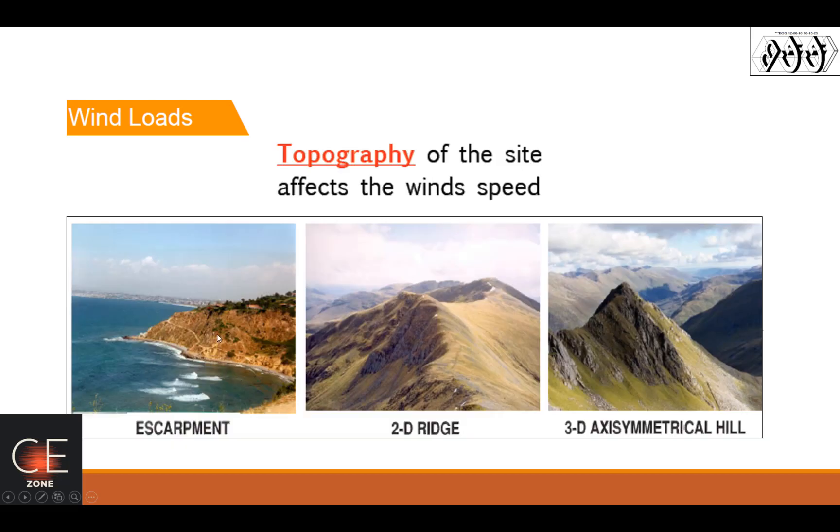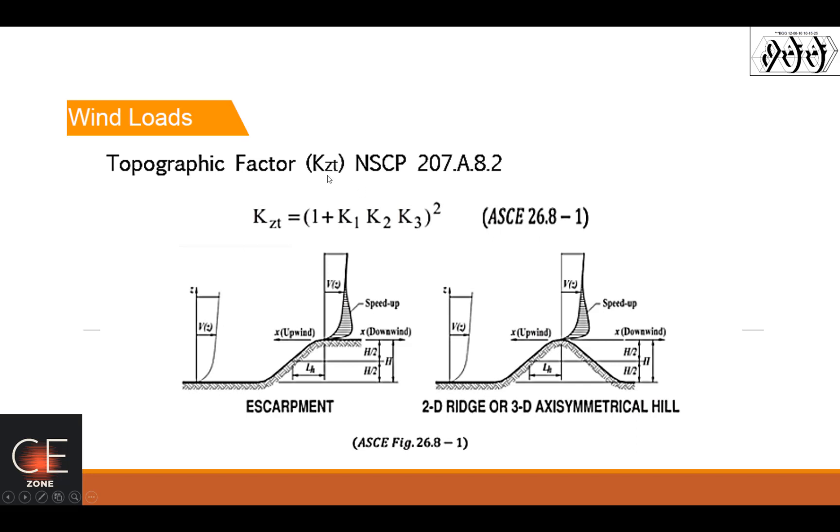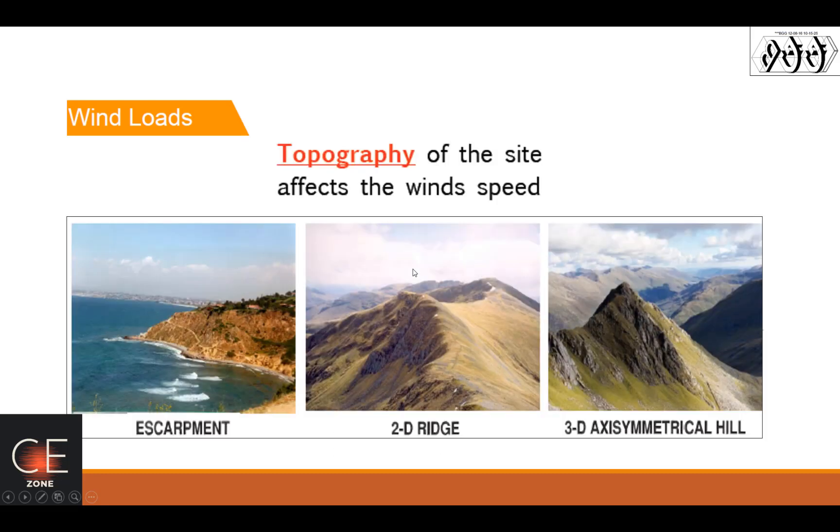The topography of the site affects the wind speed for escarpment, ridge, and 3D asymmetrical hill. Your KZT here, the topographic factor, should be greater than 1. You need to calculate for K1, K2, and then K3. Well of course, you need the data. You need the contour, probably of this escarpment if your structure is located there or in this ridge.